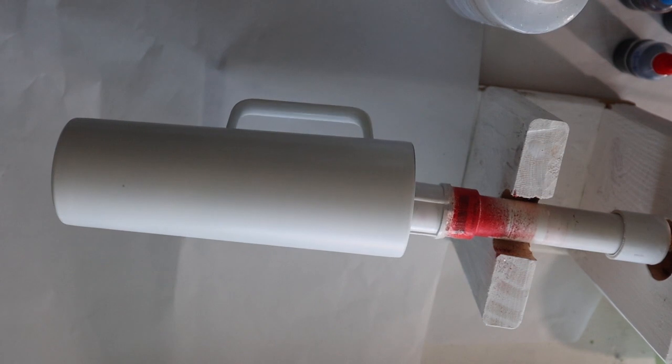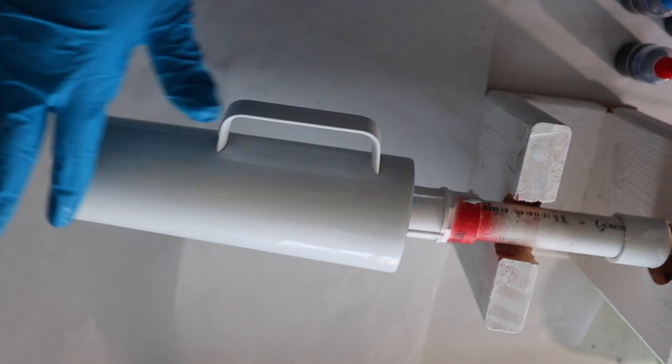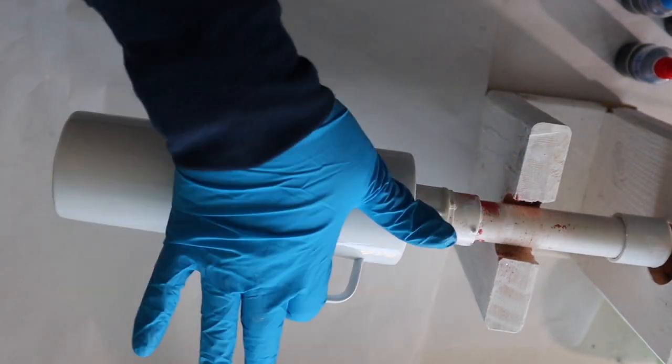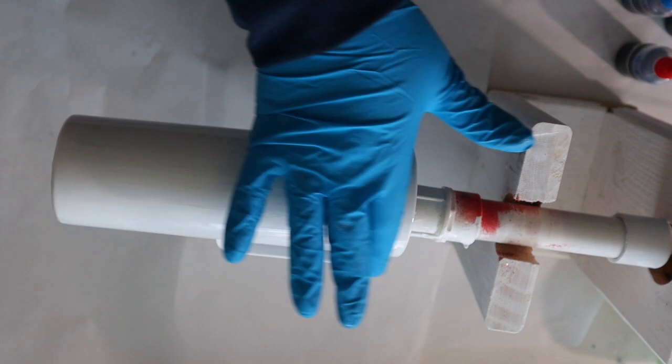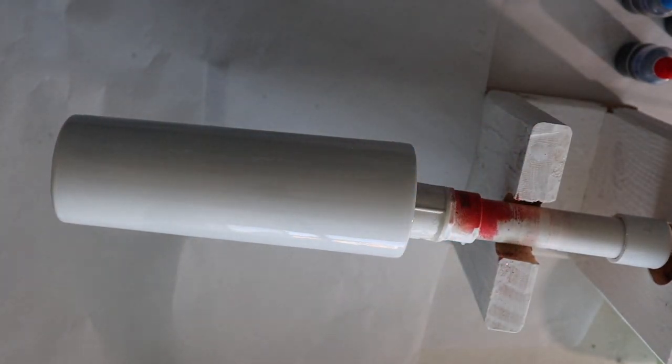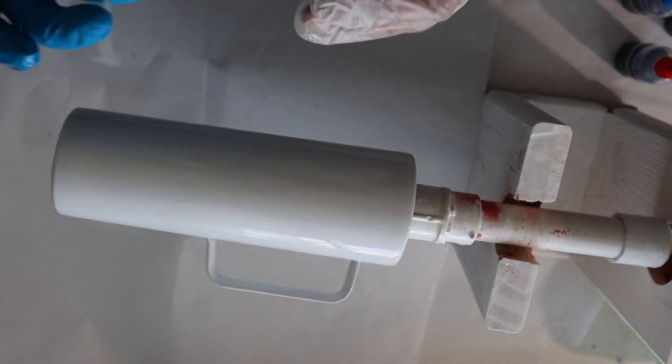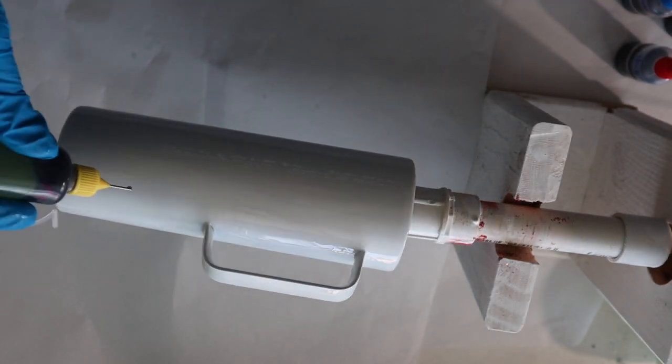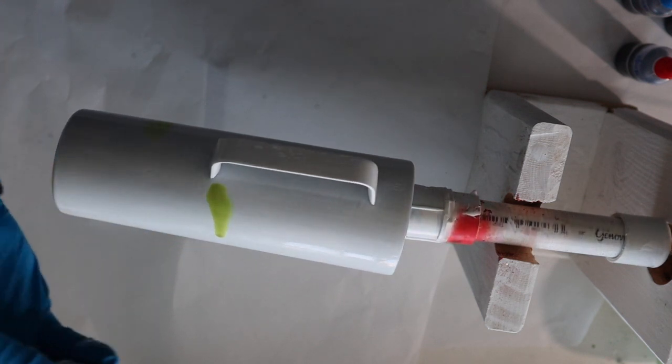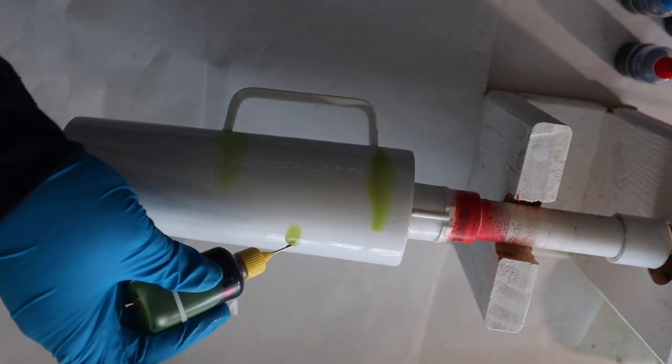After you have mixed your epoxy, the next thing that you want to do is make sure your cup is rotating evenly. You want it to be flat, not going up to one side or another. Then you want to coat that cup evenly throughout. Once you have done that, the next thing you're going to do is add your alcohol inks to the cup.